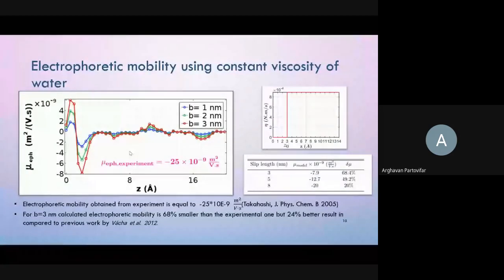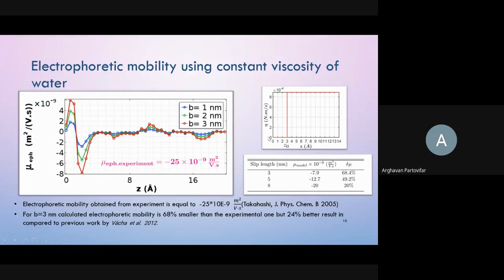In this part, we present results of our model, assuming that the viscosity across the air-water interface would be equal to bulk water viscosity beyond the shear plane. This plot is the electrophoretic mobility considering mentioned viscosity in the model versus different positions of shear plane across the interface, and we plotted for slip lengths one, two, and three nanometers, by contemplating that position of shear plane could be from zero to approximately two nanometers.